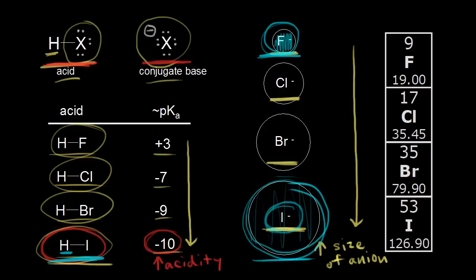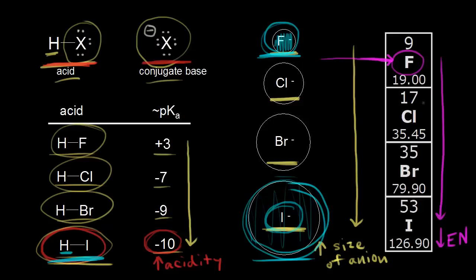This is different from the previous video, where we compared elements in the same period — moving horizontally across the periodic table. In that case, the fluoride anion was the most stable because fluorine is the most electronegative element and best able to stabilize a negative charge. But as you go down a group, electronegativity decreases, so it cannot be the dominant trend. If electronegativity were dominant, it would predict HF to be the strongest acid, which is not what we observe. Going down a group, it is the size of the anion that determines conjugate base stability: the larger the anion, the better it stabilizes a negative charge, the more stable the conjugate base, and the stronger the acid.